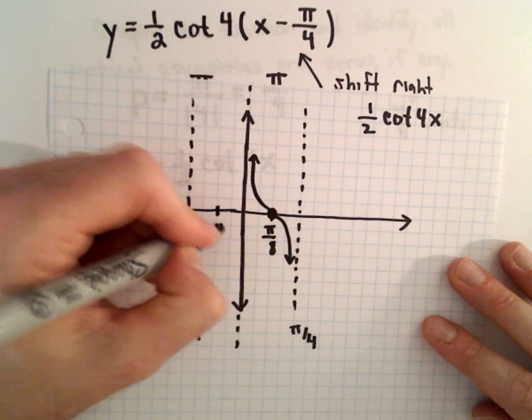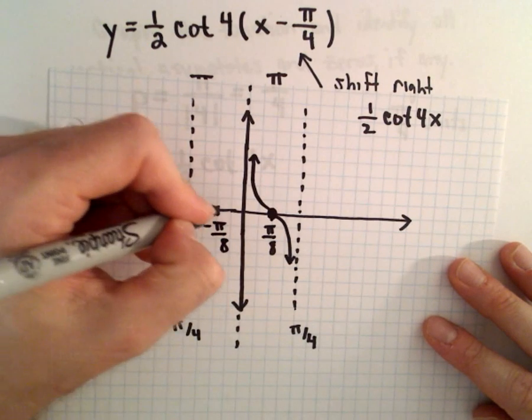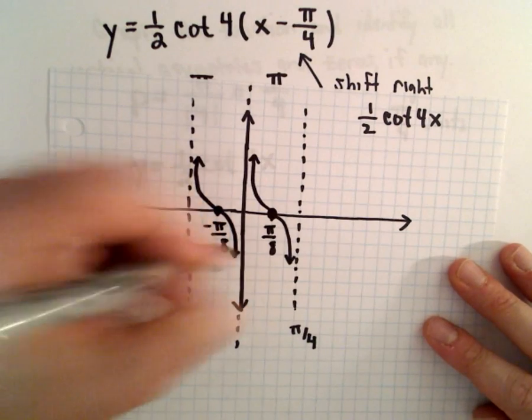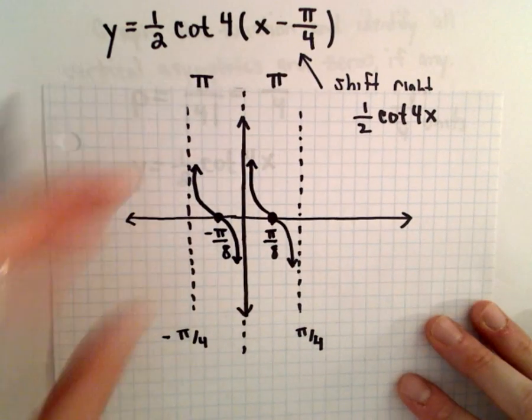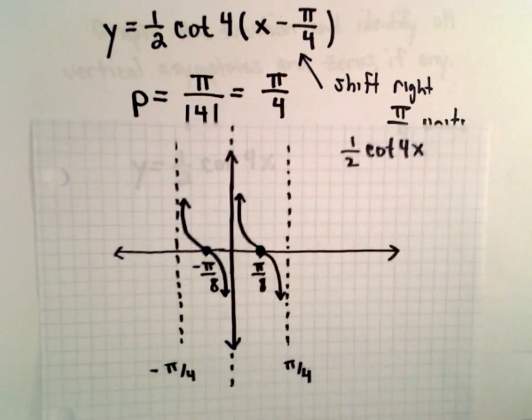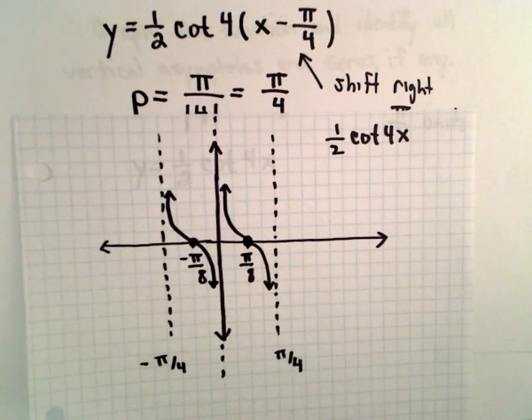And again, at this point, this point would be negative pi over 8. And again, you would have the exact same graph, just repeating itself. And you could draw as many of these as made you happy. So, I think two make me happy. That's good enough.